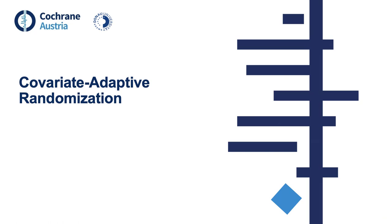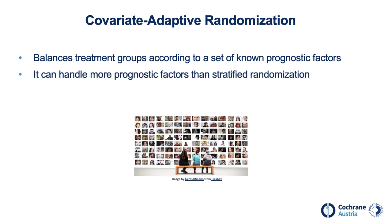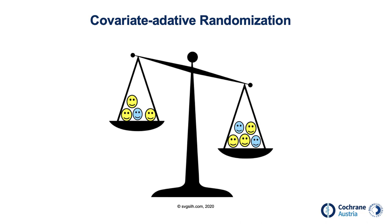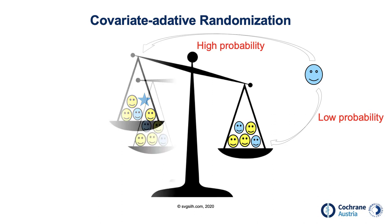Let's look at covariate adaptive randomization first. Covariate adaptive randomization attempts to balance treatment groups according to a set of known prognostic factors — also called covariates — and compared with stratified randomization, it can handle more prognostic factors. For example, if participants with an important prognostic factor are overrepresented in group 1, and the next participant also has that factor, covariate adaptive randomization will assign a higher probability that this participant will be assigned to the group where that factor is underrepresented. It is still possible that the participant will be assigned to the other group, but the probability is lower. The goal is to achieve treatment groups that are balanced regarding prognostic factors.